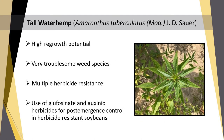Within the group of plants that exhibit high regrowth potential, we can count tall waterhemp. Its germination throughout the season and rapid growth rate make management of this species very complex. To make matters worse, evolved herbicide resistance to multiple modes of action exacerbates the problem. Glufosinate and auxinic herbicides are currently the only two options for post-emergence control of tall waterhemp in resistant soybeans.